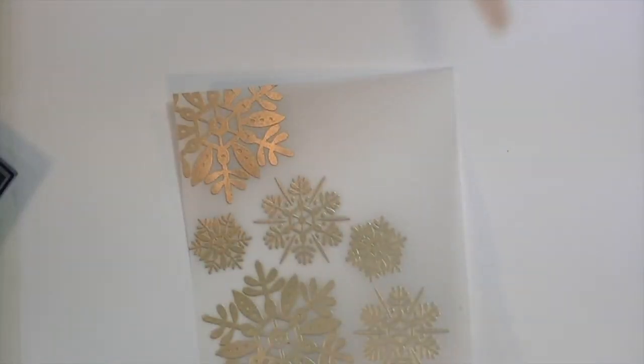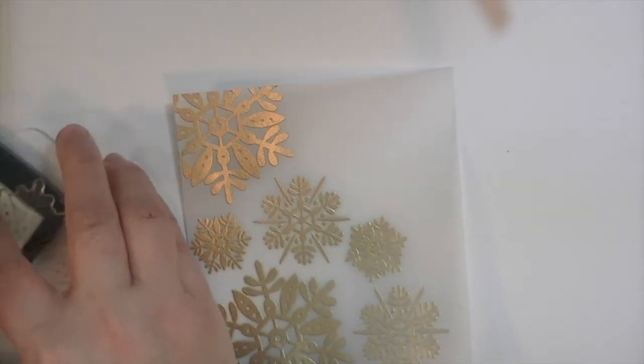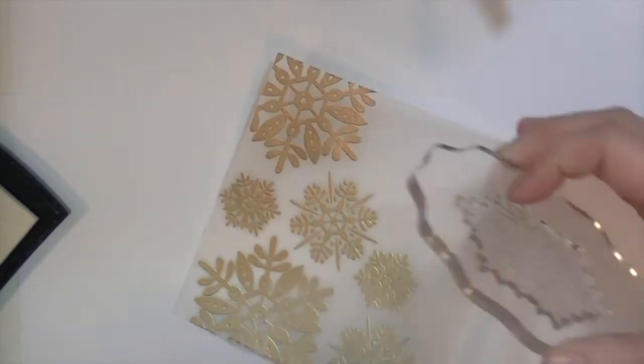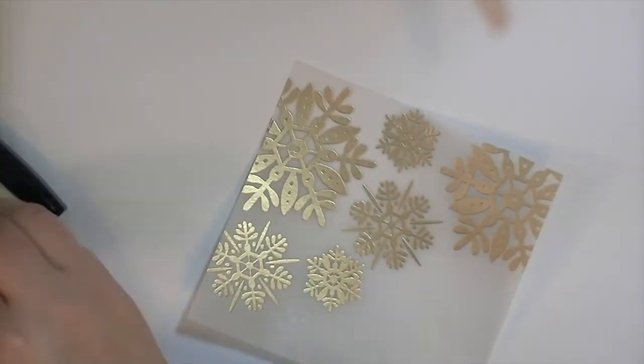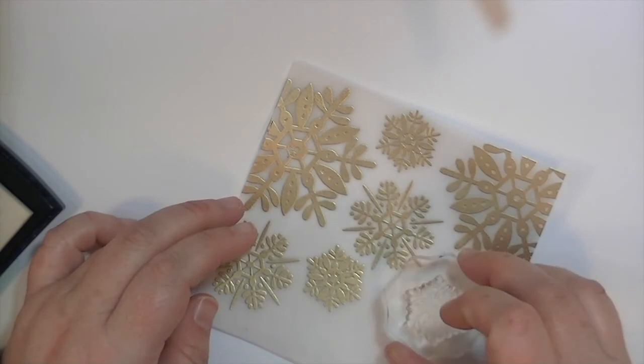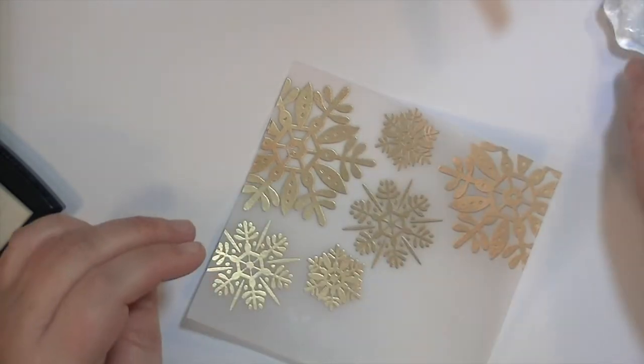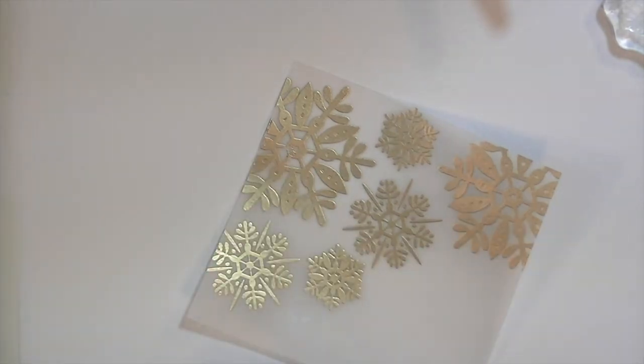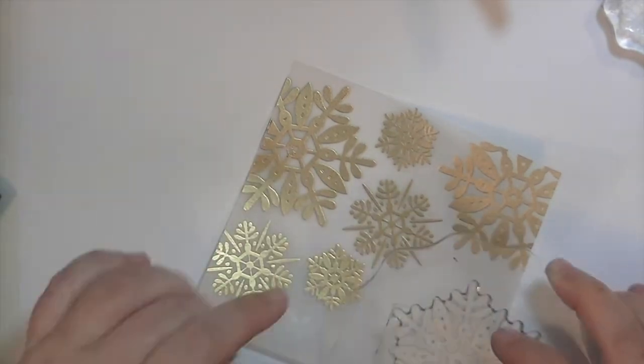I'm using some detail gold embossing powder from Recollections. And I find that it works really well on the vellum because I feel like it melts really fast. Maybe it's because it's so finely ground, I'm not sure. But the key to embossing on vellum is to use the side that is a little more textured, that has a little more tooth to it.